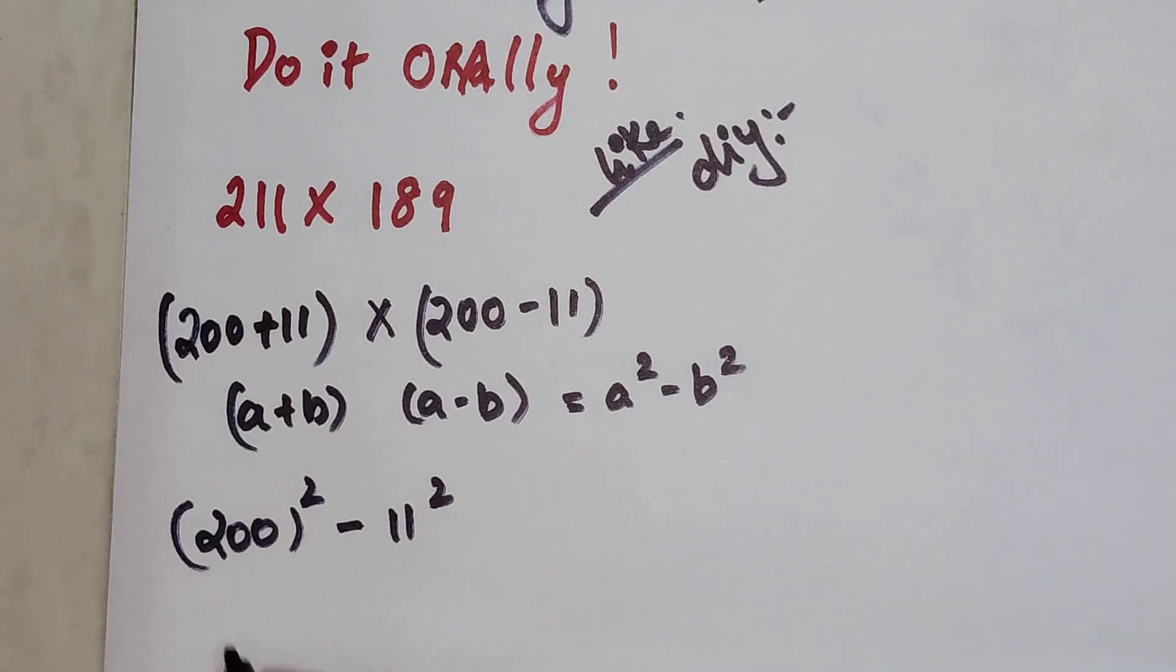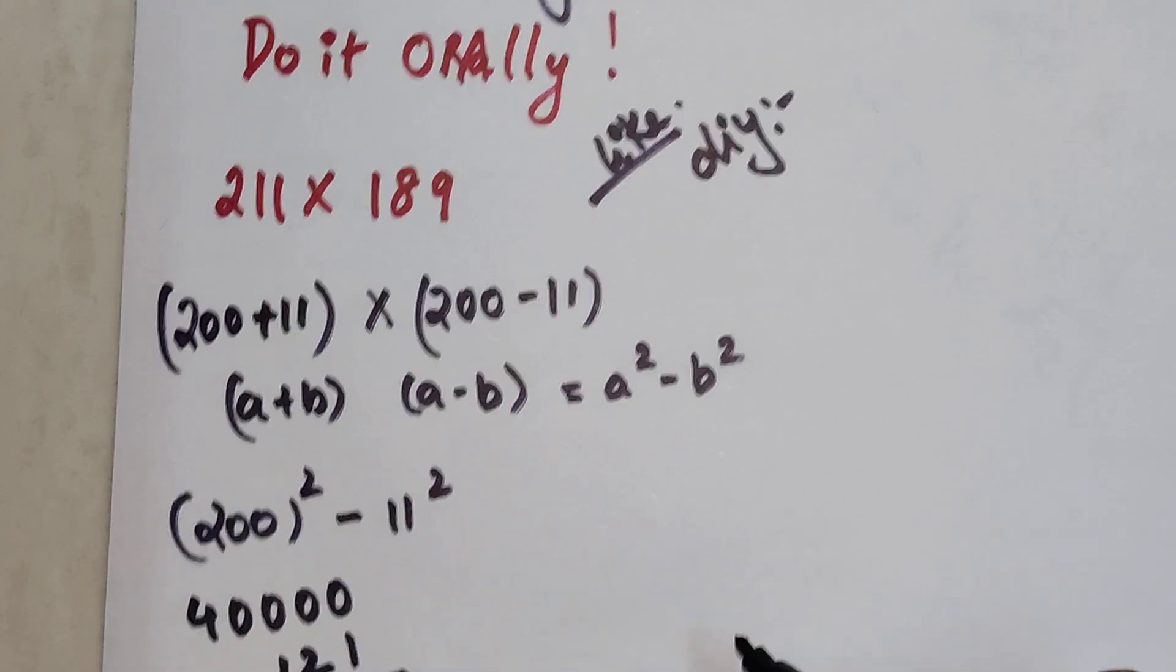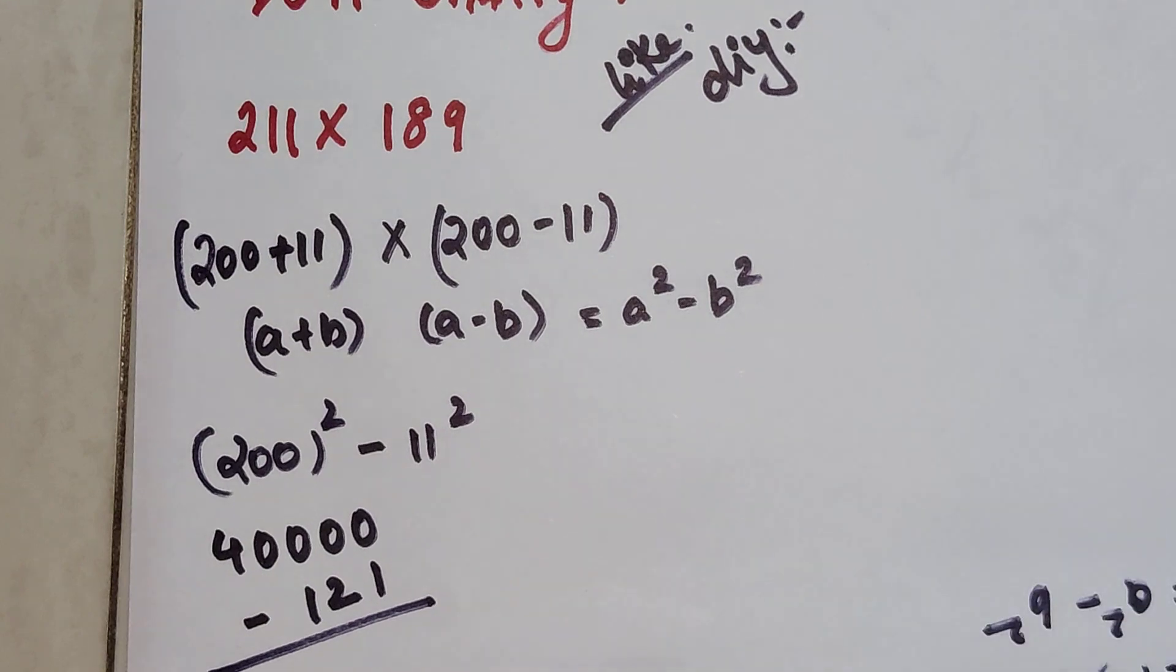So 200 square is nothing but, 2 square is 4 and the zeros will get doubled. So we have 2, so we will put 4 zeros. And then we will subtract 121 from this. Why? Because 11 square is 121.